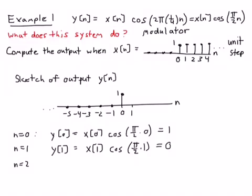Similarly, n equal 2, y[2] is equal to x[2], which is 1 times cosine π over 2 times 2. Well, this is cosine of π, which is minus 1. So the overall result will be minus 1.